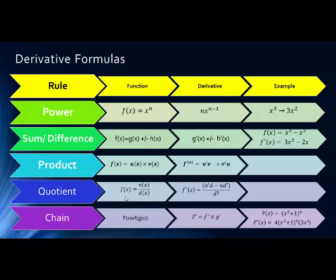The Quotient Rule is a little more involved. Using N for numerator and D for denominator to keep it clear: when we have a function that's a quotient of two other functions, the derivative equals the derivative of the numerator times the denominator, minus the numerator times the derivative of the denominator, all over the denominator squared.